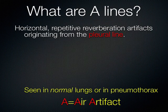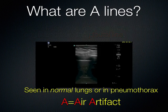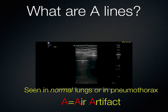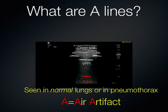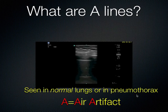Now we're going to move on and talk about infections in the chest. Recall that there is something called an A-line — a horizontal, repetitive, reverberation artifact that originates from the visceral-parietal pleural interface. This is the skin line here, and we see the pleural line where the visceral and parietal pleura come together. Then at equidistant intervals we can see A-lines coming down. The distance between the chest wall and the visceral-parietal pleural interface should equal the distance between the pleural interface and the first A-line. A-lines represent an air artifact — we see this with normal lungs, and also in patients who have a pneumothorax.